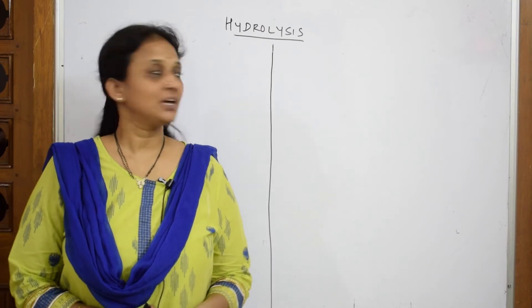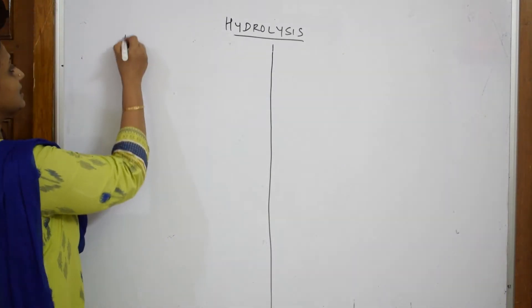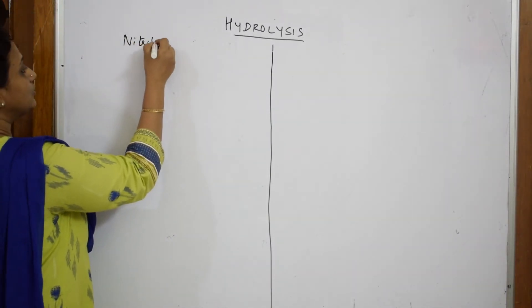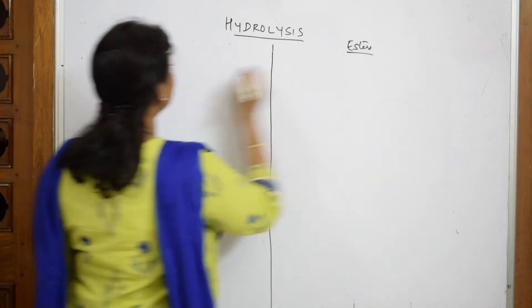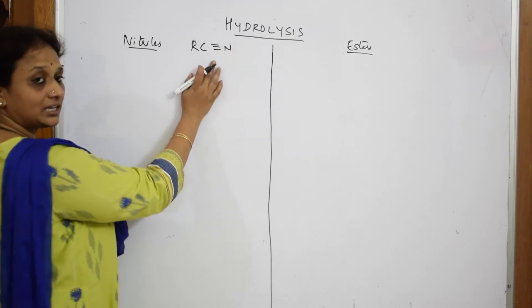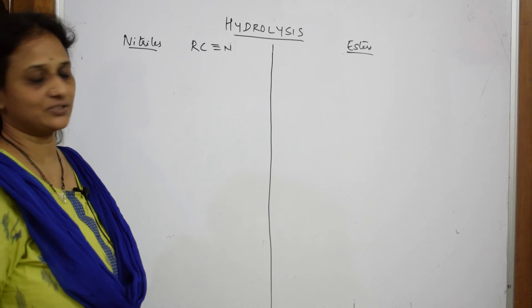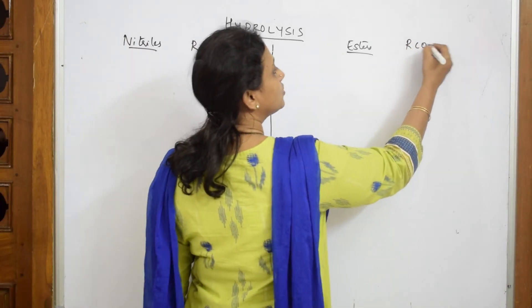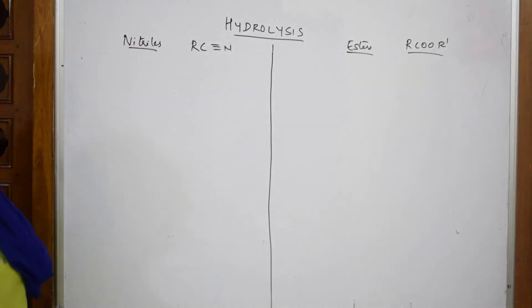Let us come back and see the hydrolysis reaction. We are going to hydrolyze nitriles and esters. Nitriles are basically R-C triple bond N, the cyano group. Esters are R-C-O-O-R', with the general structure R-C-O-O-R'.